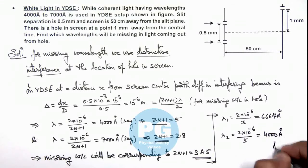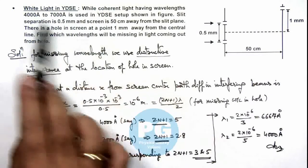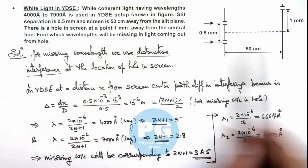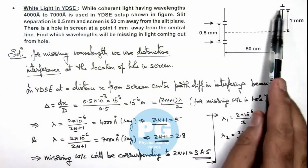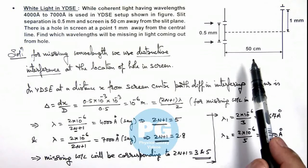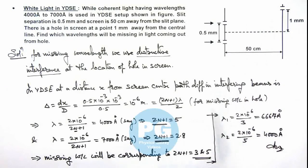So these are the results of this problem. These two wavelengths will be missing between 4000 to 7000 angstrom, which will have destructive interference at the location of this hole, which will not come out from the hole.